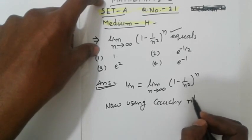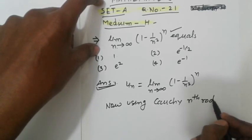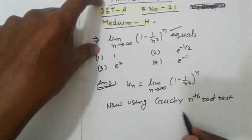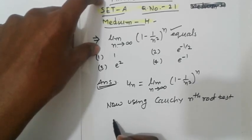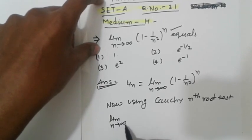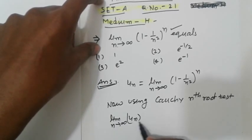We are now using Cauchy nth root test. The Cauchy nth root test: limit as n tends to infinity of u_n raised to 1/n.